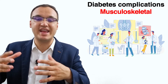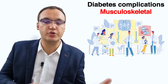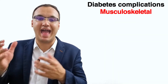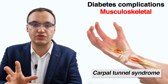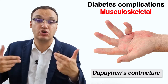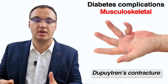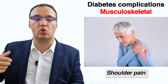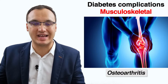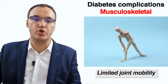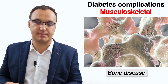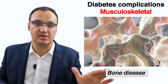There's a range from very rare to very common. For example, hand abnormalities like carpal tunnel syndrome or Dupuytren's contracture — these are common ones. We also have shoulder pain, osteoarthritis, limited joint mobility, and other bone diseases, which can be rare.